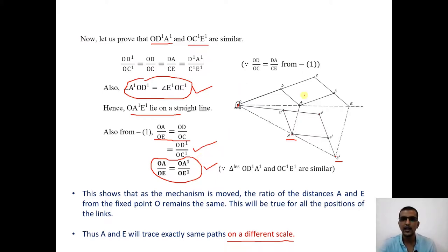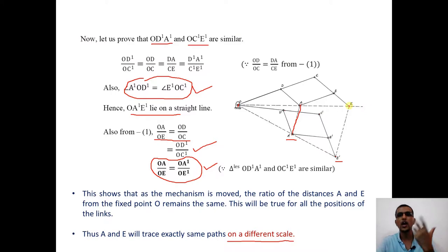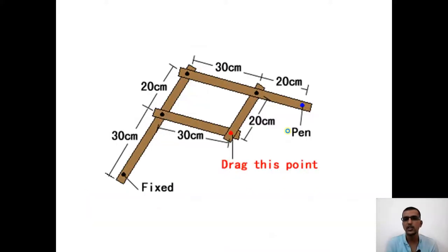Now let us see the vice versa. If I trace along A to A', I get an enlarged diagram at E to E'. But if I have a big heart available and want to reduce it, I trace at point E and I will get the same drawing on a reduced scale at A to A'. So if you trace along A you get an enlarged diagram at E; if you start tracing at E you get the same drawing on a reduced scale at A. This is what the pantograph is all about.